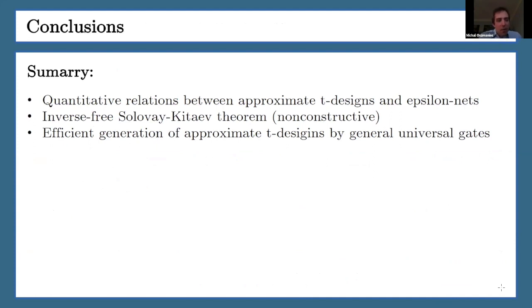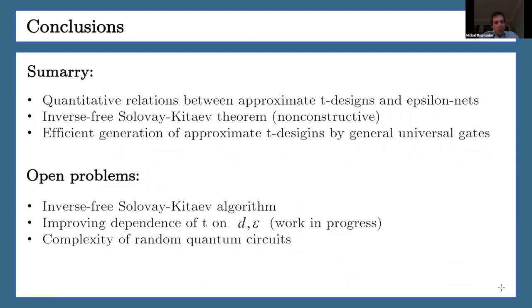It's time to conclude. I presented some quantitative relation between approximate designs and epsilon nets. You have the possibility to have inverse-free Solovay-Kitaev theorem, but non-constructive one. And lastly, I tried to explain that you can efficiently generate approximate designs without requiring inverses. Some open problems for the future: it would be great to have inverse-free algorithm, I don't give you the algorithm how to find the sequence. Also an improved dependence on the degree of the design on T and epsilon is interesting. We are trying currently to connect it to the problem of complexity of random quantum circuits. With that, I'd like to conclude. Thank you.